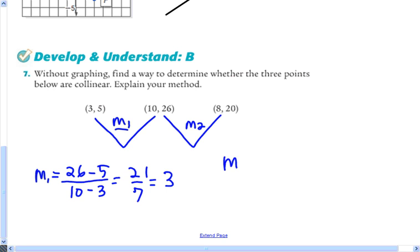and our slope 2 is equal to, we're going to subtract two Y values, 26 minus 20, subtract the X values, 10 minus 8, and we get 6 over 2, which is 3,